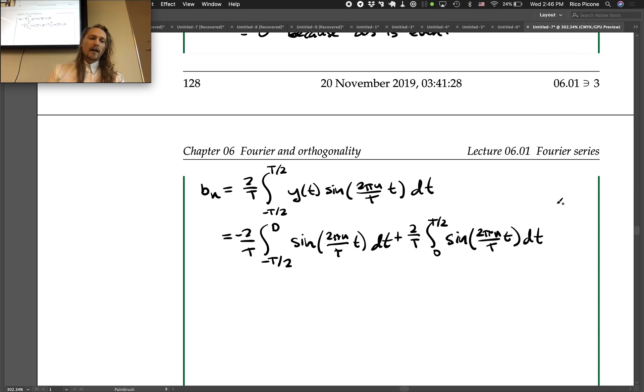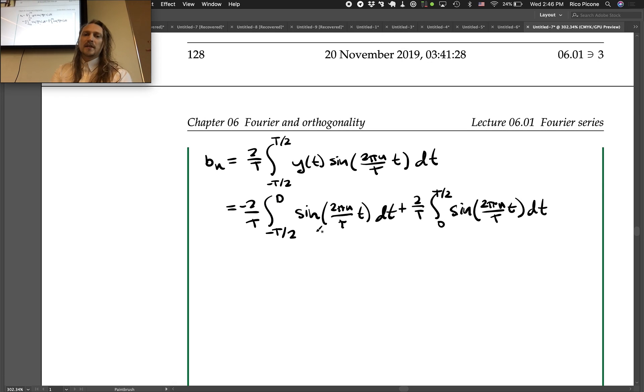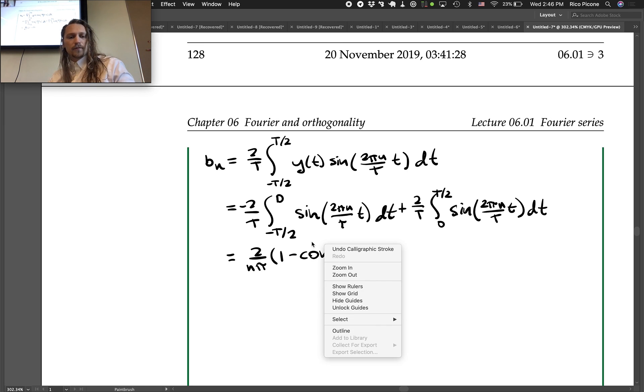So, now, these are going to have opposite signs, because the sine is an odd function. So, these are going to have opposite signs, and these two terms already have opposite signs, so they won't add to 0 in this case. Instead, this actually simplifies down to 2 over n pi times 1 minus cosine of n pi.